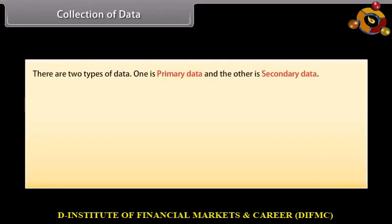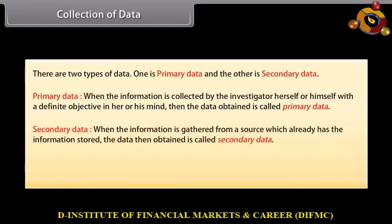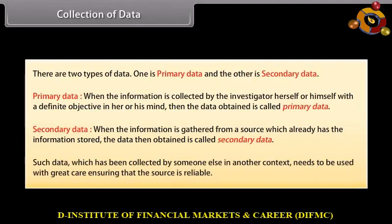Collection of data: There are two types of data — primary data and secondary data. Primary data is when the information is collected by the investigator herself or himself with a definite objective in mind. Secondary data is when the information is gathered from a source which already has the information stored. Such data, collected by someone else in another context, needs to be used with great care, ensuring that the source is reliable.